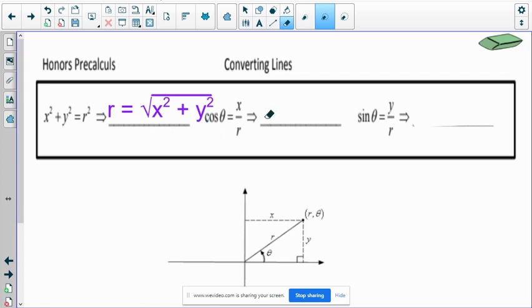If we were to multiply this r up, we could convert x to be r cosine. And similarly, we can convert y to be r sine. Those are kind of the formulas that you're going to need to know for converting between rectangular and polar.